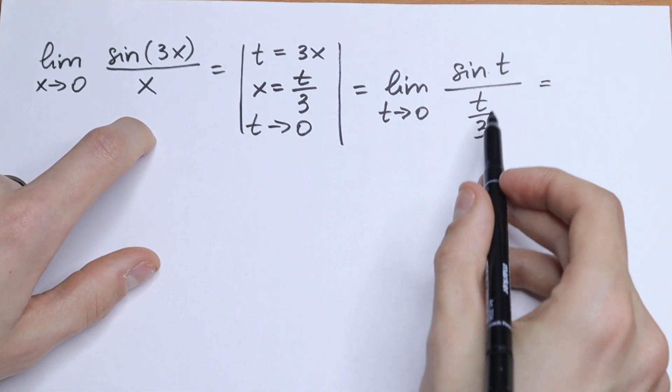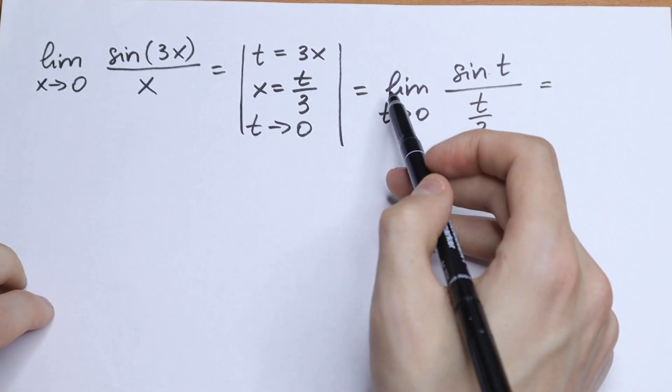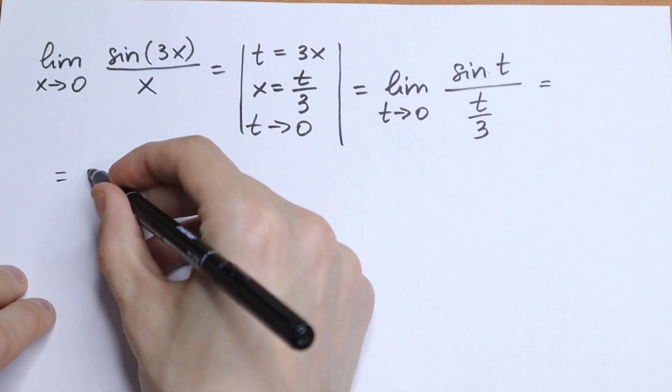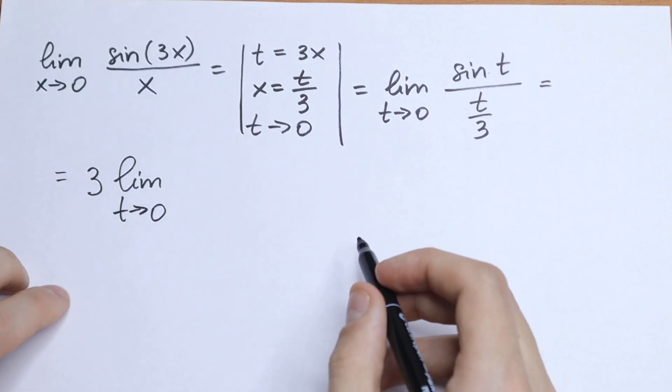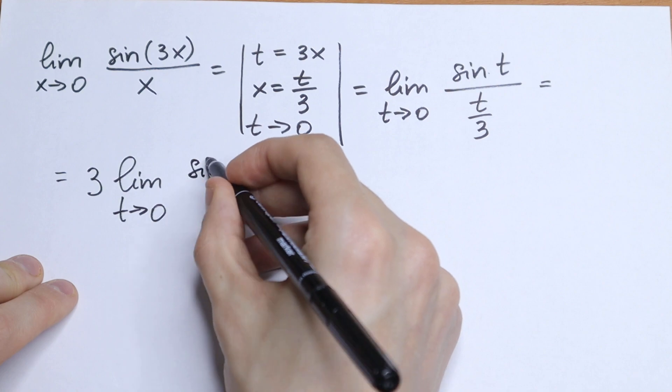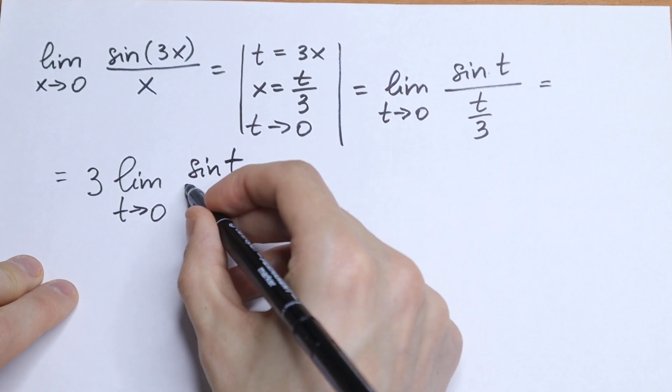And moreover, this is a constant, so we can write 3 right here. So as a result, this will be equal to 3 times limit as t approaches 0 of the function sin t over t.